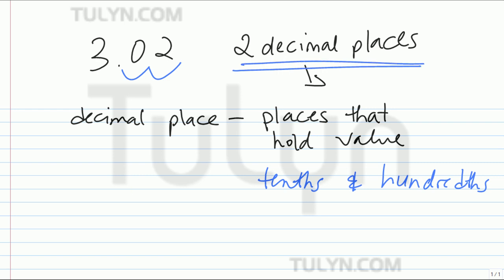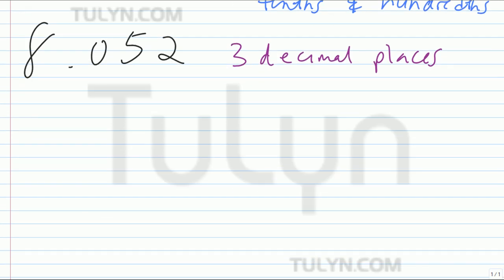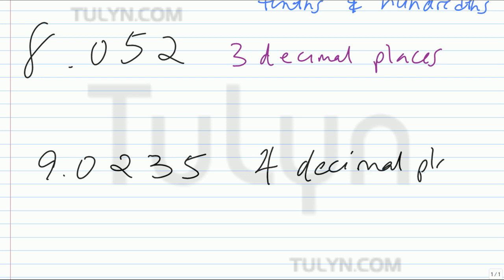How about something like 8? How many decimal places are here? If you said 3, then you're correct. Now if you said 4 decimal places here, you're correct. If you said 1 decimal place here, you're also correct.